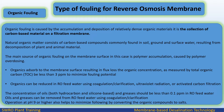Organics adsorb to the membrane surface resulting in flux loss. The organic concentration, as measured by total organic carbon (TOC), should be less than 3 ppm to minimize fouling potential. Organics can be reduced in RO feed water using coagulation/clarification, ultraviolet radiation, or activated carbon filtration. The concentration of oils, both hydrocarbon and silicone-based, and greases should be less than 0.1 ppm in RO feed water. Oils and greases can be removed from RO feed water using coagulation.